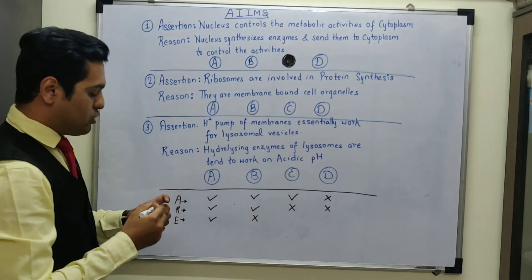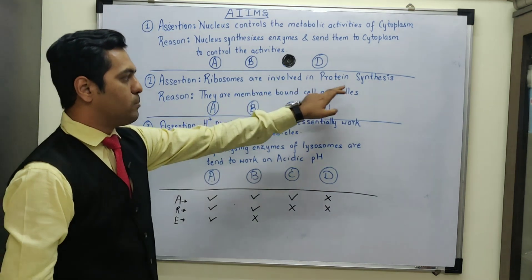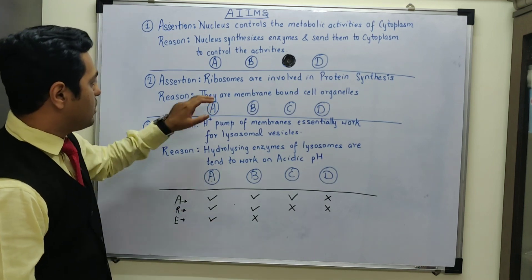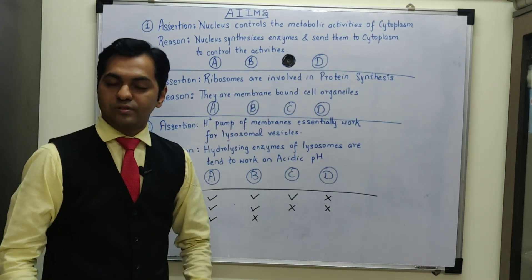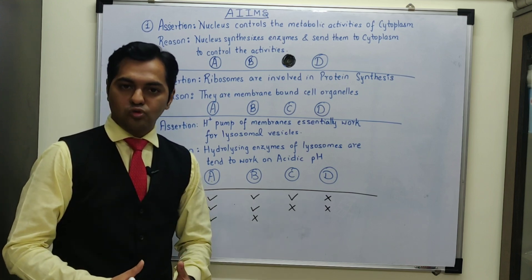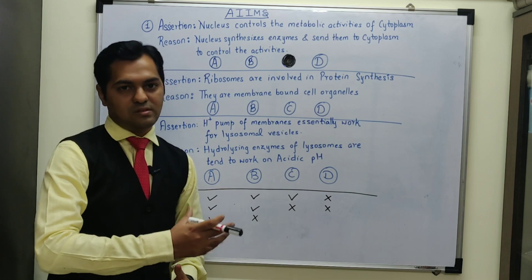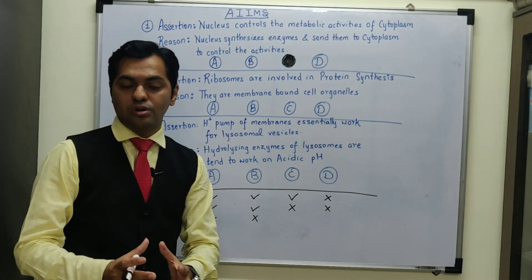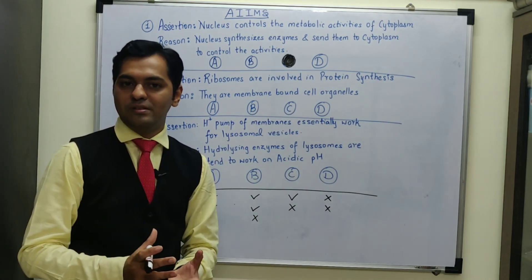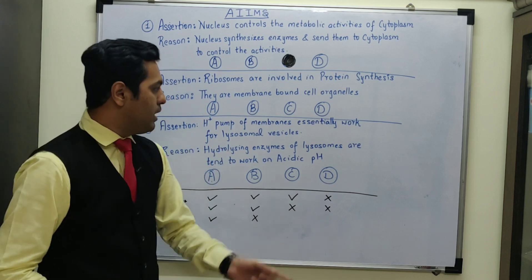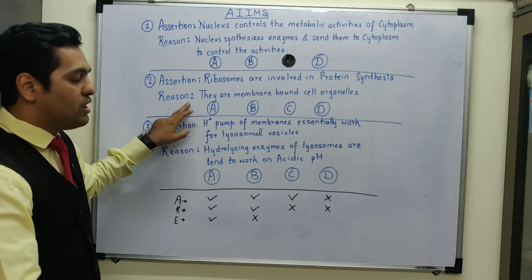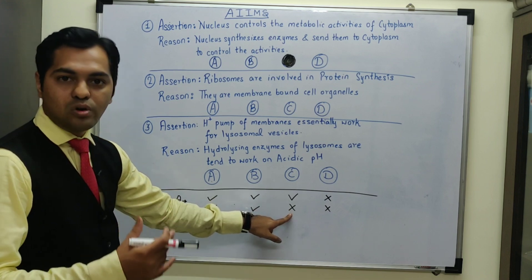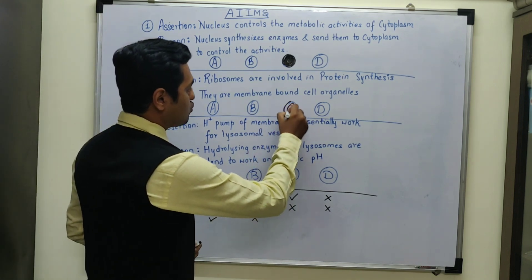The second MCQ: the assertion states that ribosomes are involved in protein synthesis — this is a correct statement, as ribosomes are the main protein-synthesizing factories. The reason given is that they are membrane-bound cell organelles. However, ribosomes are non-membranous; they are granular particles with no membrane present. So the reason is itself an incorrect statement. Assertion is correct but reason is totally incorrect, hence again the option is going to be C.